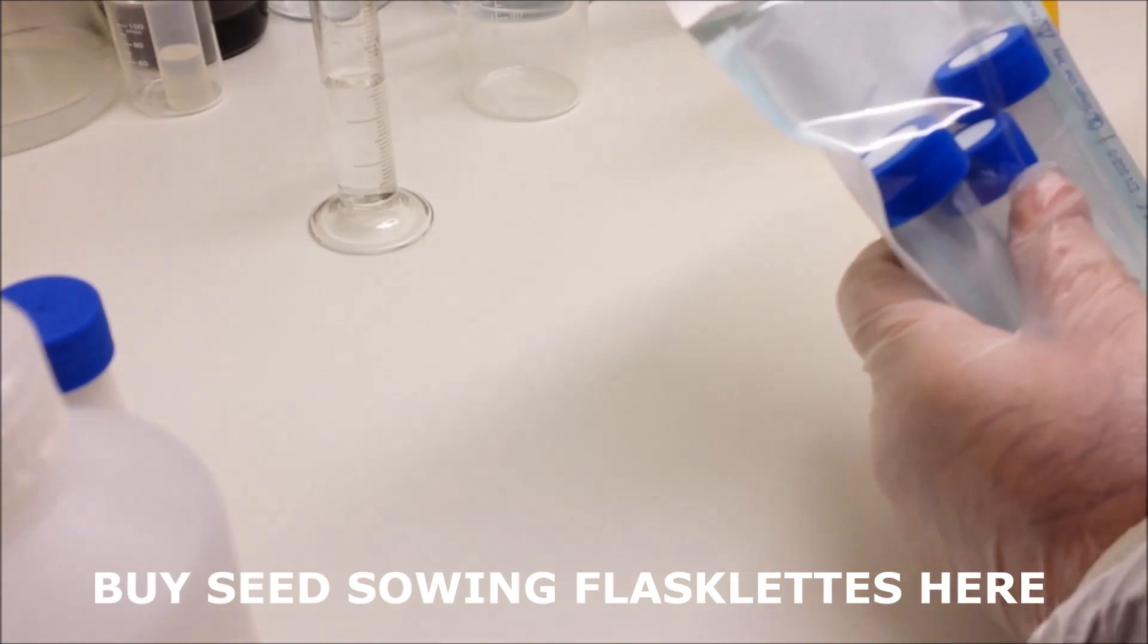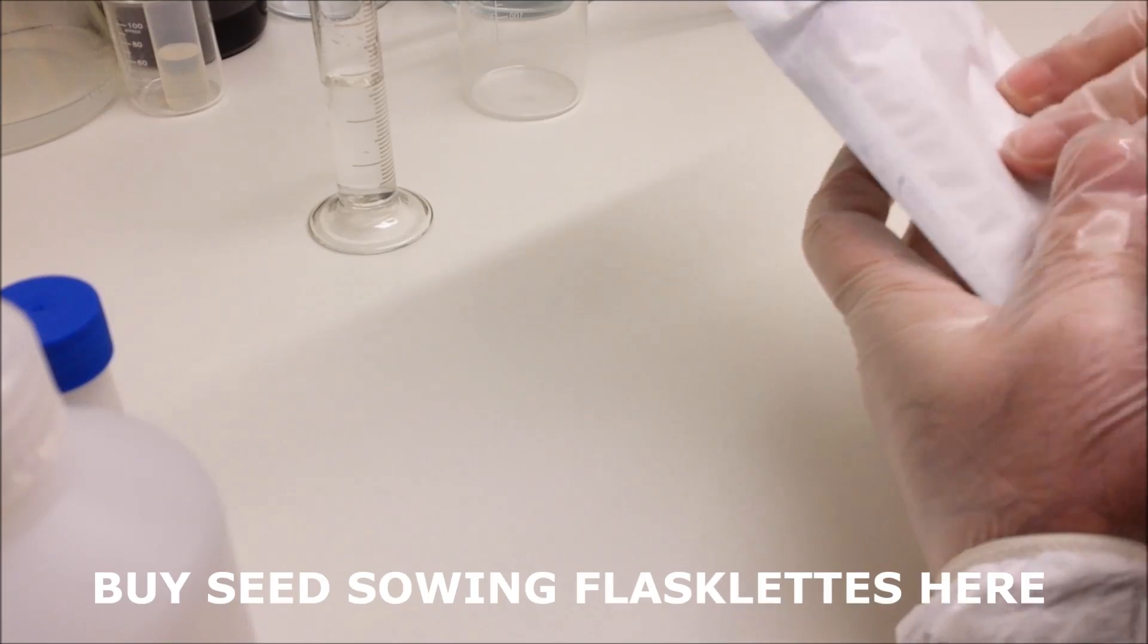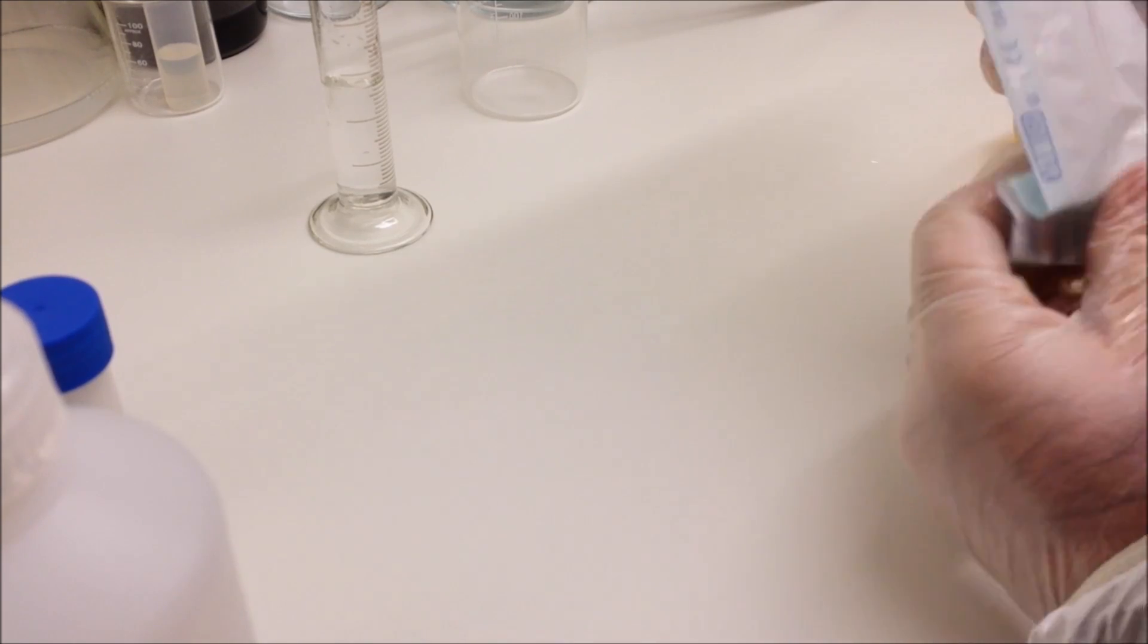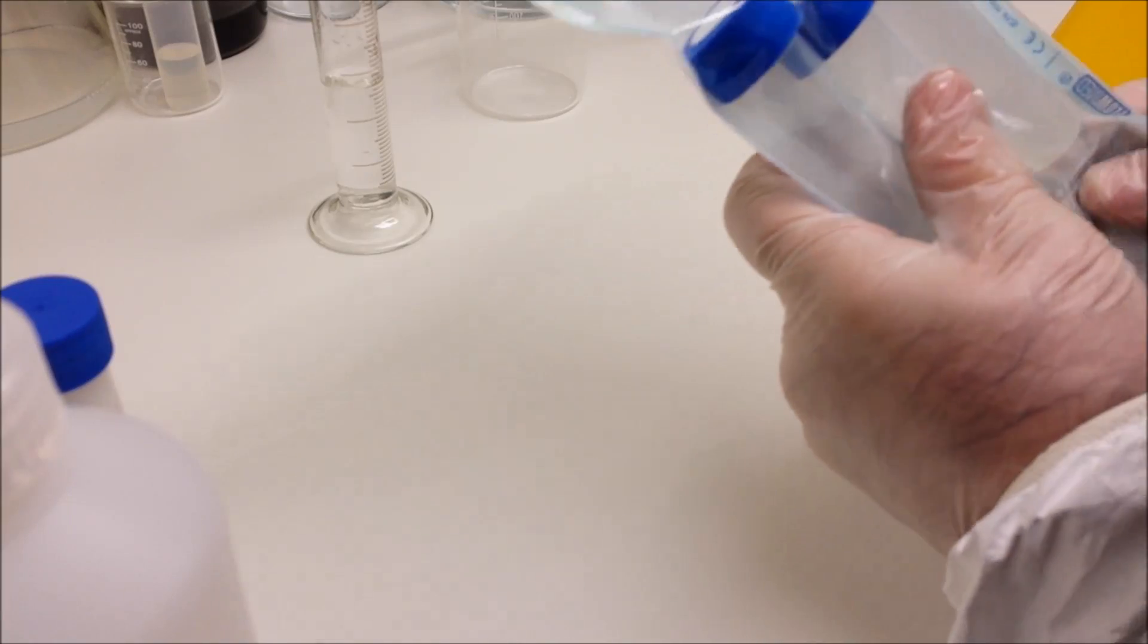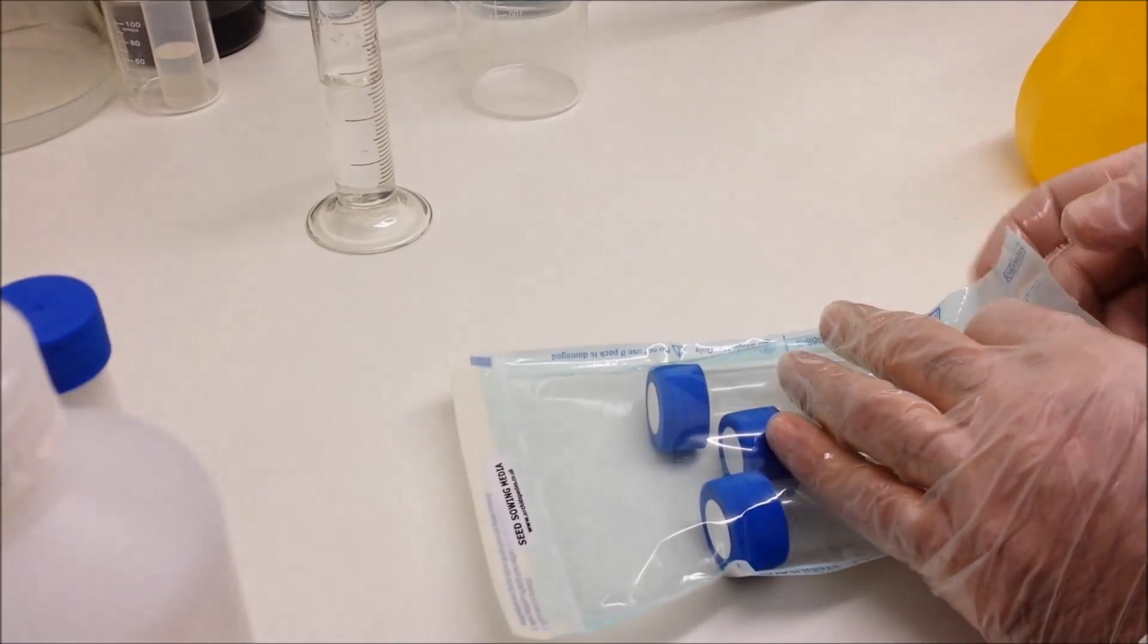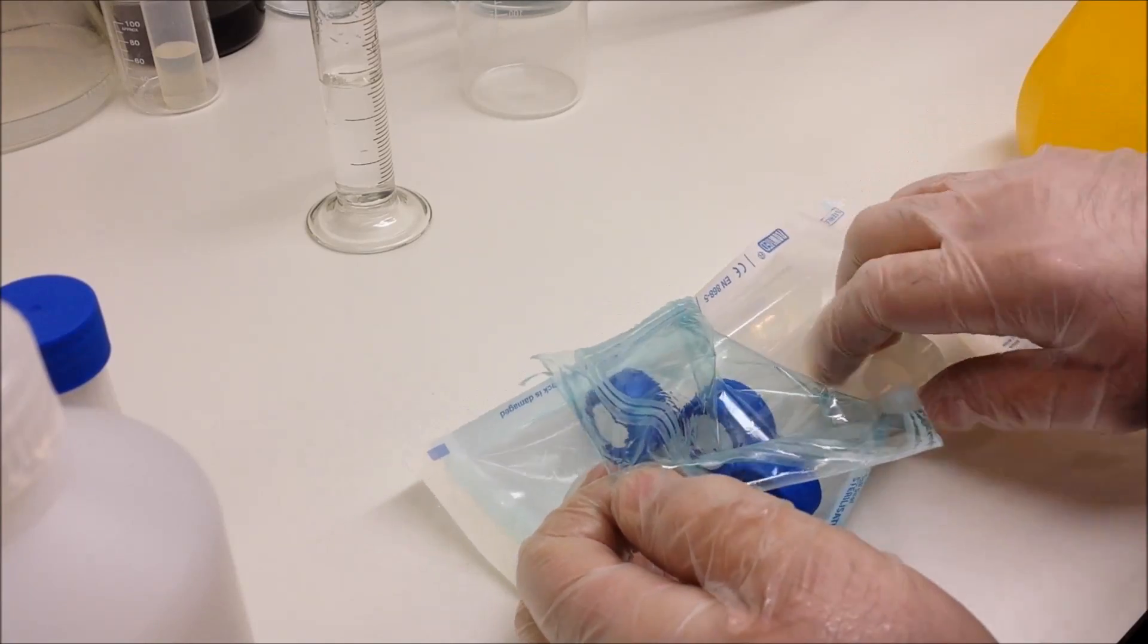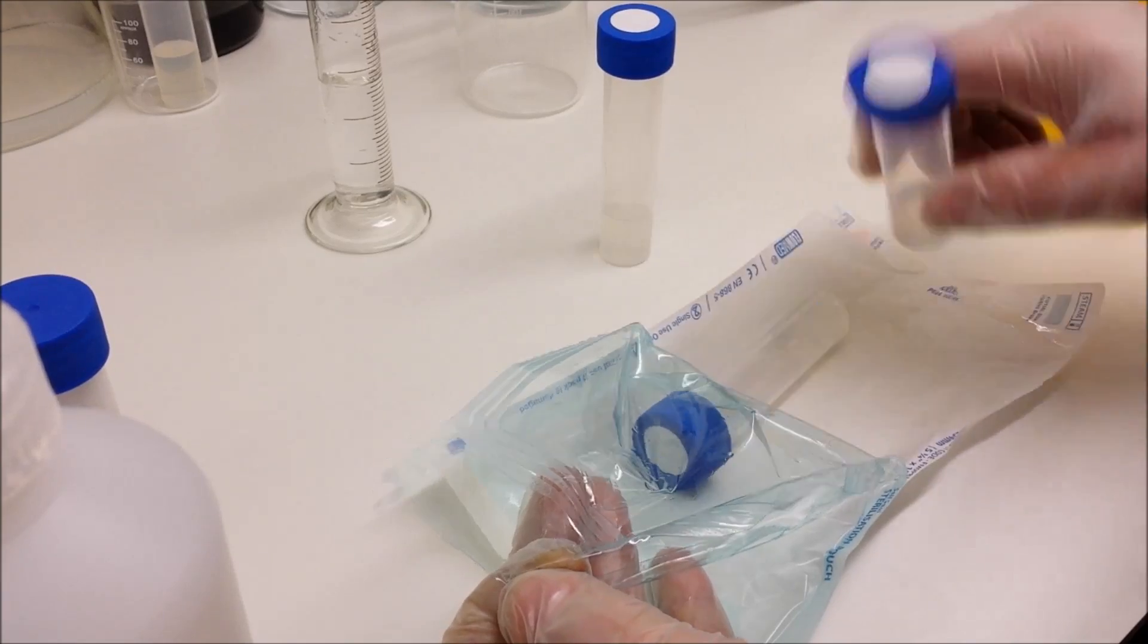Today we're going to be using the seed sowing media flasklets available from the link you can see on screen. We're going to spray with IPA isopropyl alcohol all over the packet, even though it's already been done once. I'm going to do it again. Really important to eradicate as many bacteria and contaminants as possible.